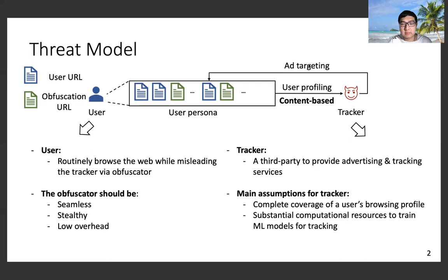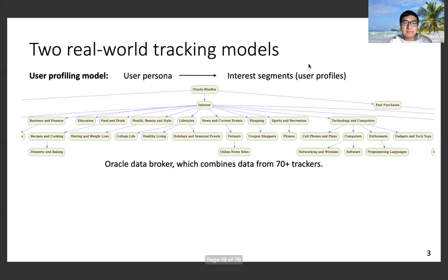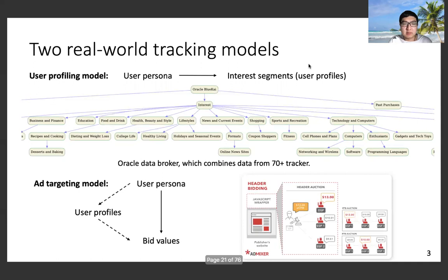Both of these two assumptions are very strong. Specifically, we consider two real-world tracking models. The first one is a user profiling model, where the input is a user persona and the output are interest segments. We choose the OERC Data Broker since it combines data from more than 17 trackers, like AcquireWeb, CrossRx, and Visa. The second model is an ad-targeting model, where the input is a user persona and the output are bid values placed by bidders. Note that the ad-targeting model is a subsequent step of user profiling, since bidders may rely on user profiles to decide the optimal bid values.